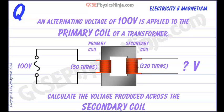We can see immediately that this is a step-up transformer because there are more turns on the secondary than on the primary. Calculate the voltage produced across the secondary coil.